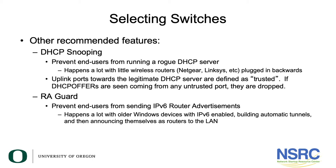This happens a lot with little wireless routers — the Netgears, Linksys, D-Links, and so forth — when they are plugged in backwards. These routers are intended for home use, but invariably they find their way into the campus network, usually when a member of staff wants to extend the little network they have in their office. They look at the router and see one port labeled 'internet' and four ports labeled 'LAN,' and they plug the LAN port into the office network, which then gives the router's DHCP server full access to the campus.